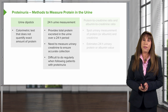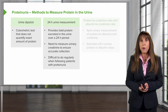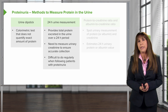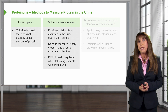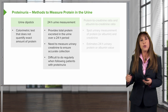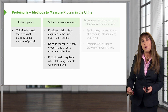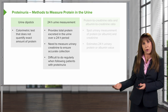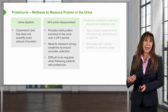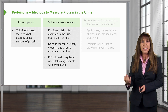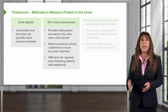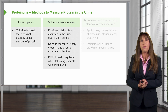Another more accurate way is getting a 24-hour urine measurement for protein collection. This provides the total amount of protein excreted in the urine over a 24-hour period. We do need to measure urinary creatinine as well to ensure an accurate collection. However, as we discussed when talking about creatinine clearance, it's very difficult to do a 24-hour urine collection, and you really don't want patients to do that repeatedly to follow their proteinuria.